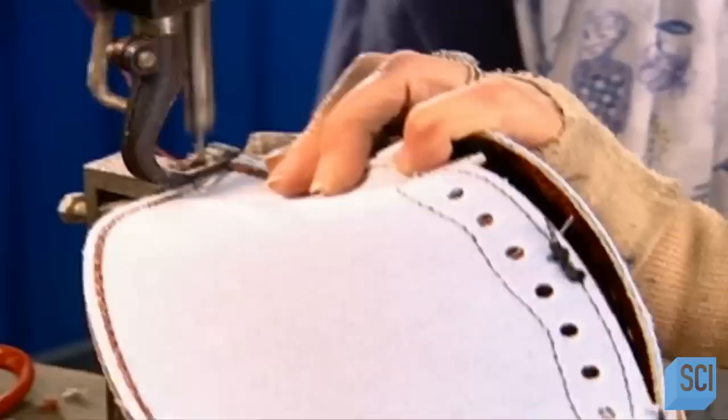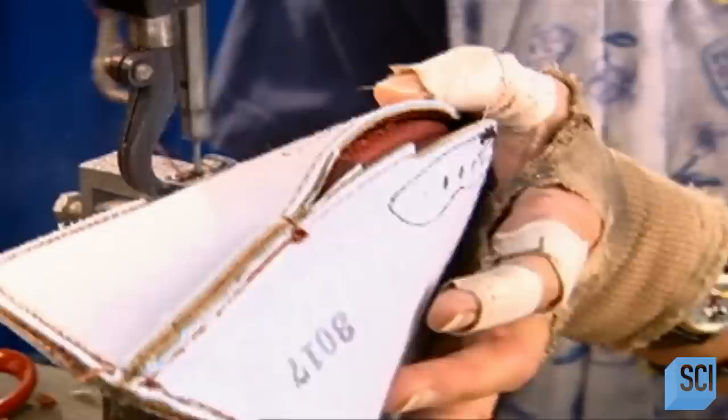Later, workers will turn the skin right side out by reaching through the opening between the lace holes. This is also where they'll insert the bladder.